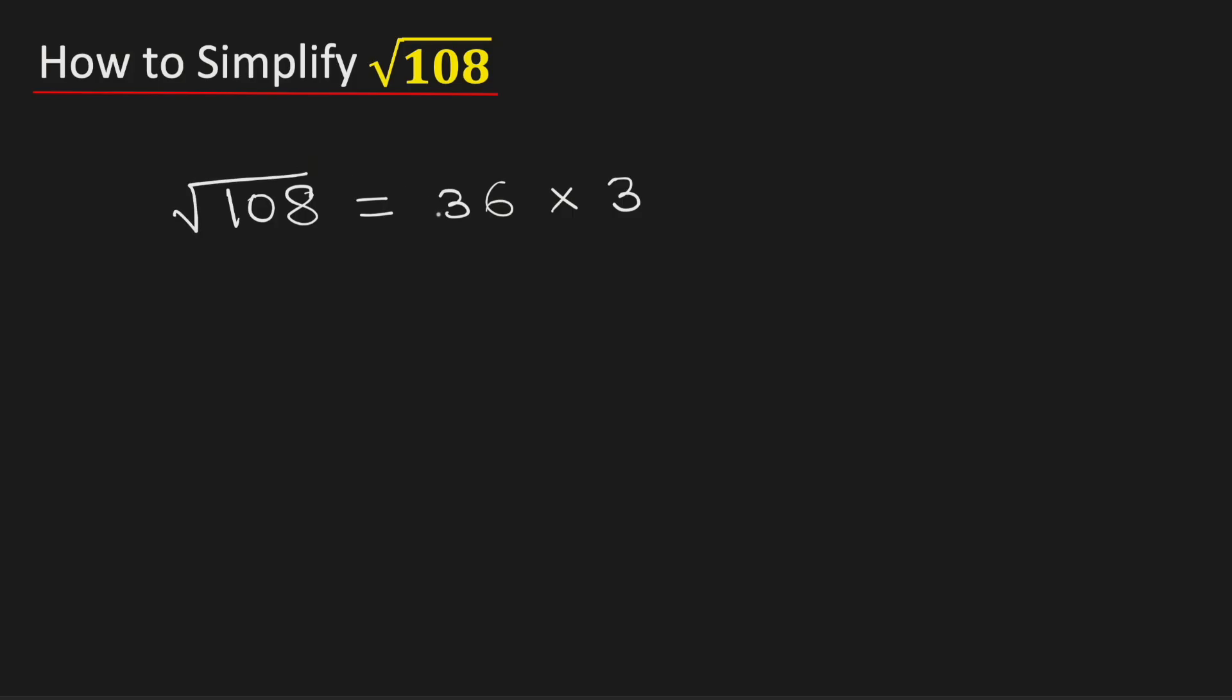Now take the square root on both sides. And this can be rewritten as square root of 36 times square root of 3, using the rule of square root of a times b is equal to root a times root b. Here a is 36 and b is 3.